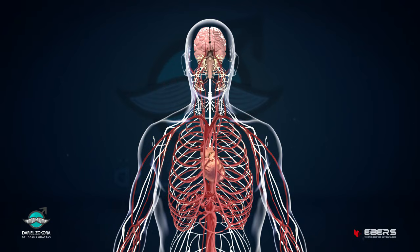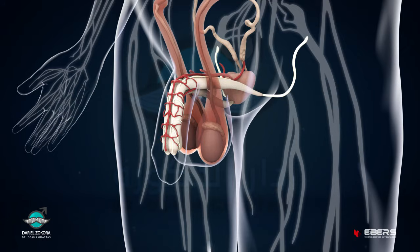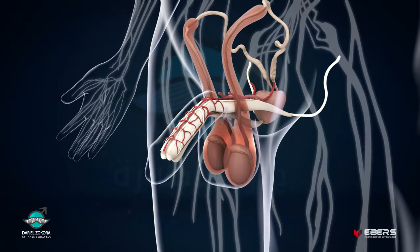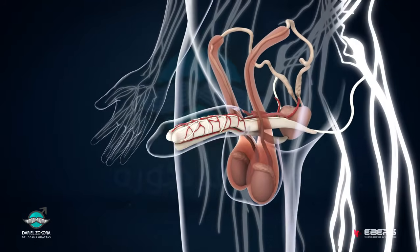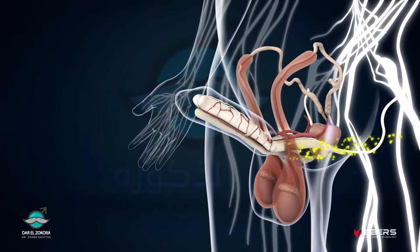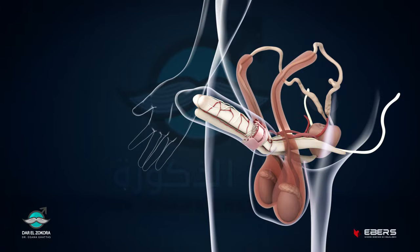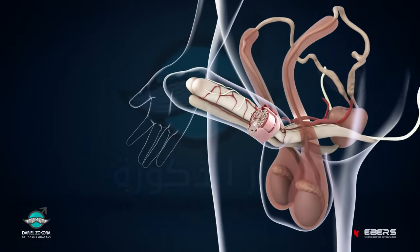Impulses from the brain cause the muscles of the corpora cavernosa to relax. The parasympathetic system relaxes the vascular smooth muscle through releasing nitric oxide, leading to vasodilation. Blood flow increases and creates pressure in the corpora cavernosa.